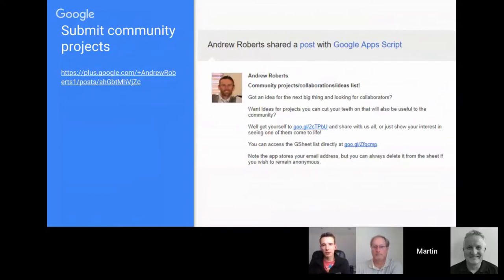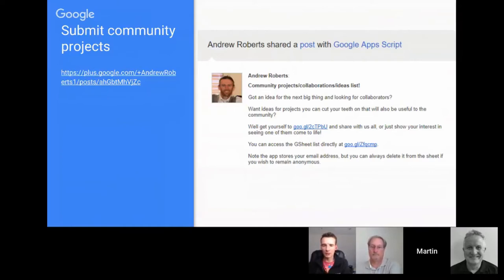Andrew Robbins started a community projects collaboration ideas list — basically crowdsourcing knowledge, expertise, and enthusiasm around different projects. There are various links to submit ideas. It's early days, but you might revisit that and highlight some of the projects that get off the ground. It's nice to see the community coming together and contributing on stuff like this.